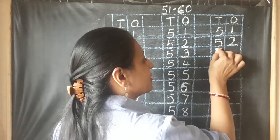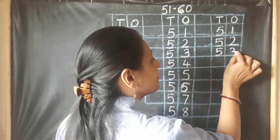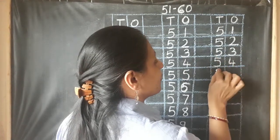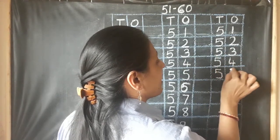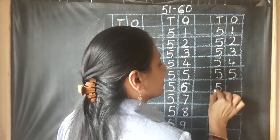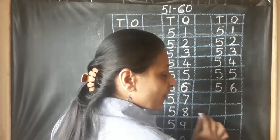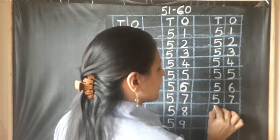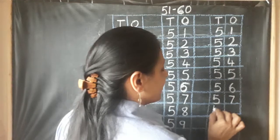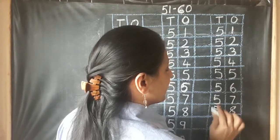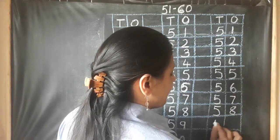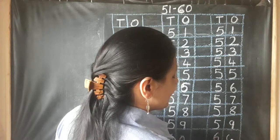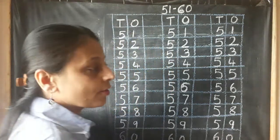Say louder. 5, 3, 53. 5, 4, 54. 5, 5, 55. 5, 6, 56. 5, 7, 57. 5, 8, 58. 5, 9, 59. And 6, 0, 60. 6, 0, 60.